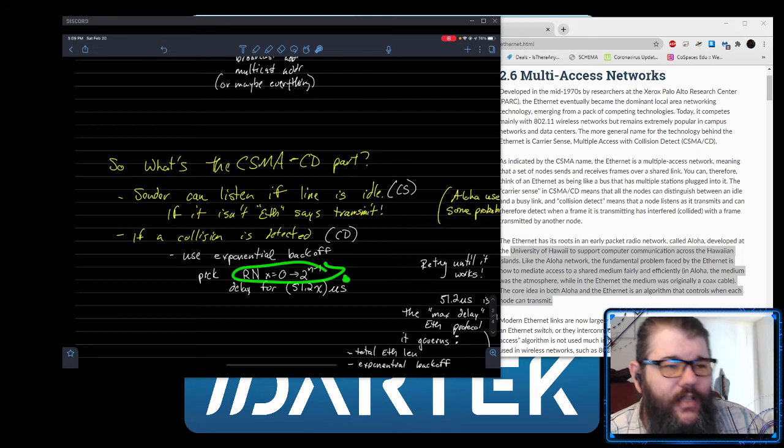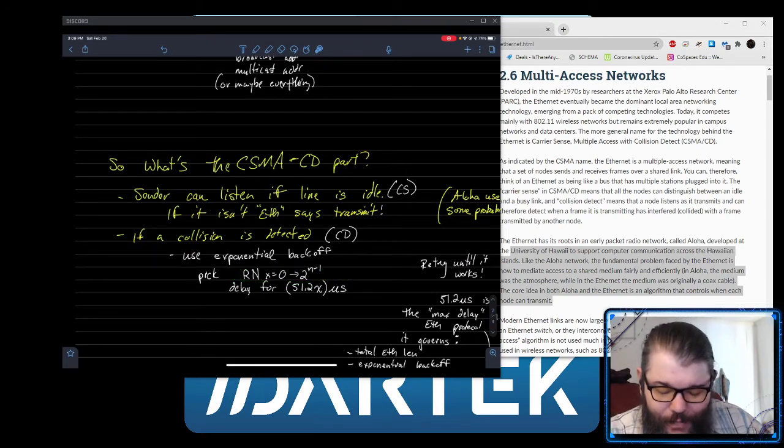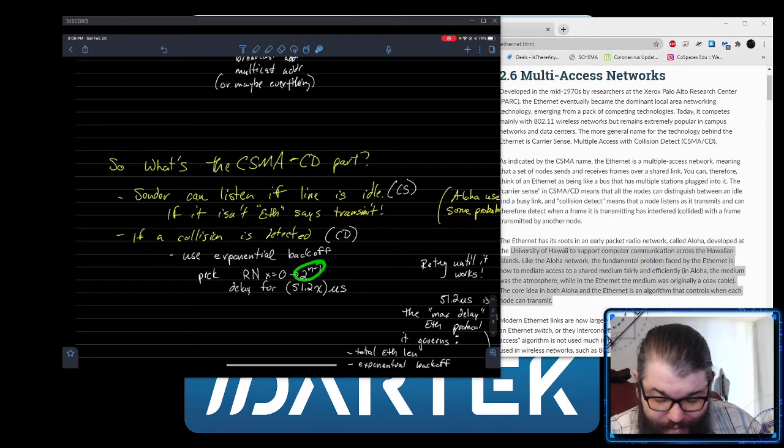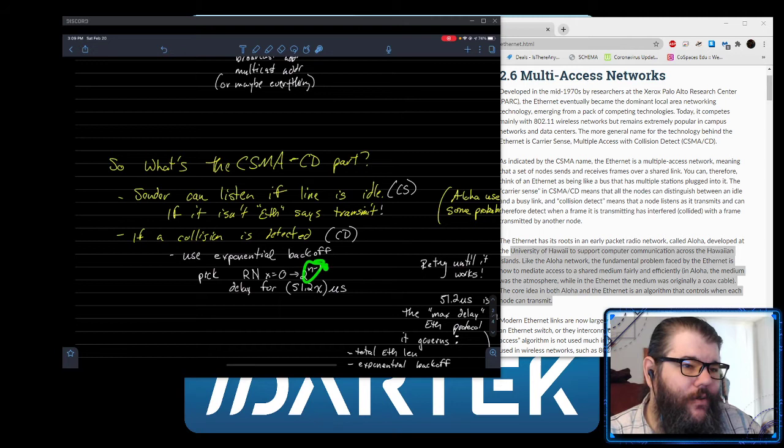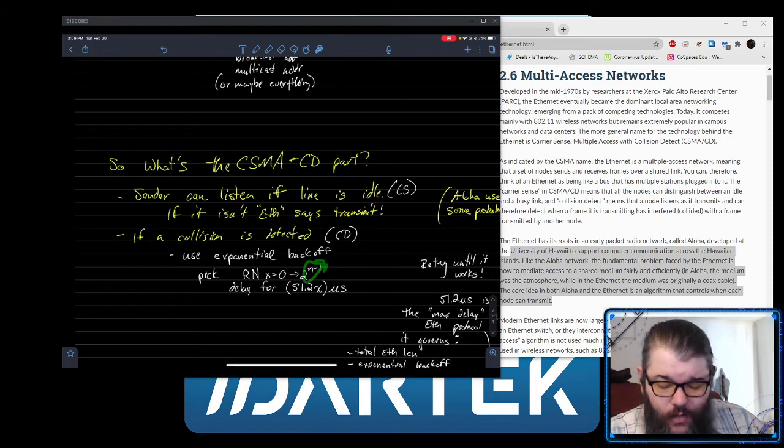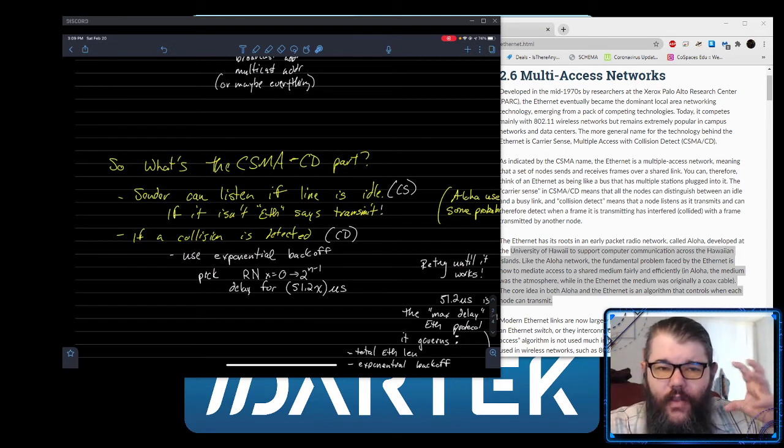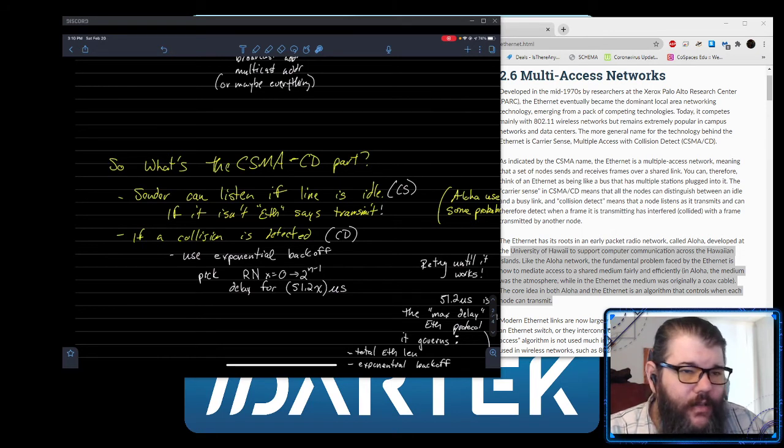If you collide again, then what you do is increase your range of random numbers by a factor of two. Instead of just choosing between zero and one time delta, you choose between zero and a couple of time deltas. There's this exponential increase in how many you're willing to wait. The first time you choose between zero and one, the second time between zero and two, the next time between zero and four, then between zero and eight. Each time you run into this collision in a row, you pick a larger range of random numbers.